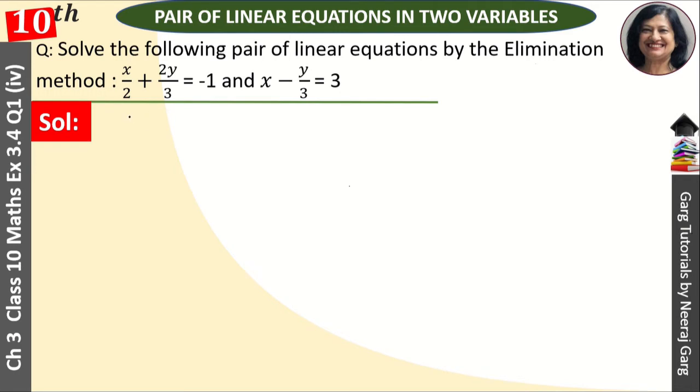We have two equations given: x upon 2 plus 2y upon 3 is equal to minus 1. This is our first equation. And our second equation is x minus y by 3 is equal to 3. This is our second equation. And we will solve by elimination method.